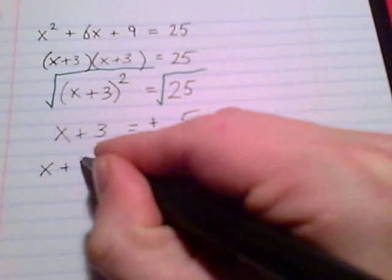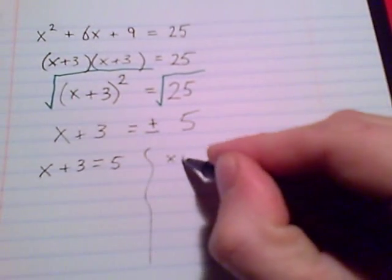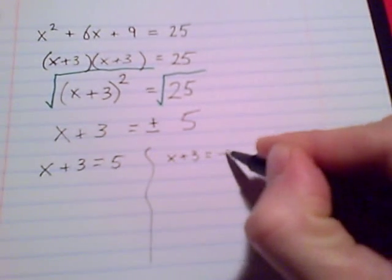I'm going to split this up right now. x plus 3 equals positive 5, x plus 3 equals negative 5.